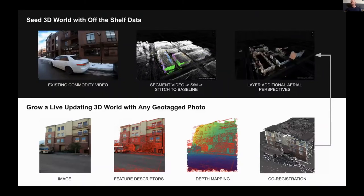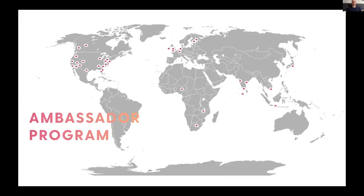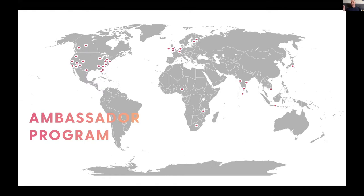The next step was getting people to collect data, so we started an ambassador program. We didn't want to just open it to the entire world and have the system fall over because we don't understand the parallel loading patterns. So we started this ambassador program — a kind of bald-faced ripoff of Cloudmade, which was one of the first startups built around OpenStreetMap data. They had an ambassador program that sent people out to encourage OpenStreetMap mapping.